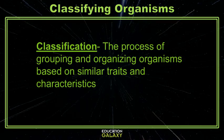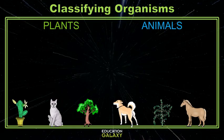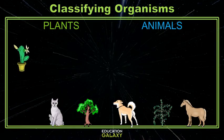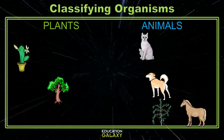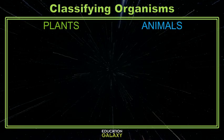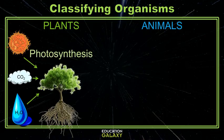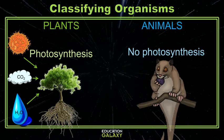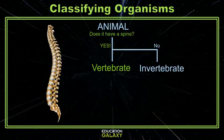Classification is simply the process of grouping organisms based on their similar traits and characteristics. I bet if I listed 6 plants and animals, you'd be able to sort them out really easily. The biggest difference is that all plants use photosynthesis to turn sunlight into food energy, while animals have to eat to get energy and are unable to do photosynthesis. Within the animal kingdom, it's divided up by animals with spines, or vertebrates, and animals without, or invertebrates.